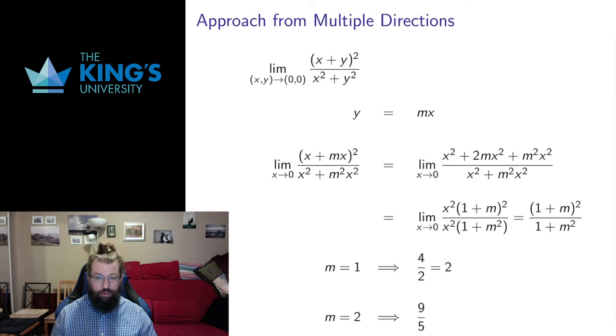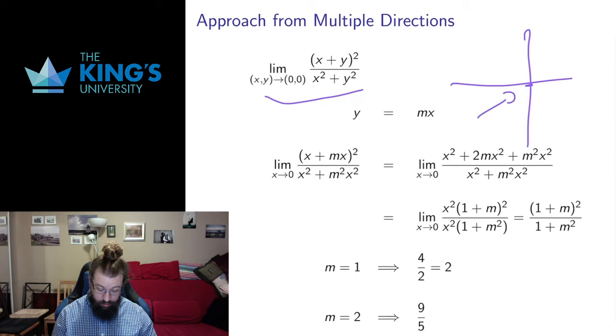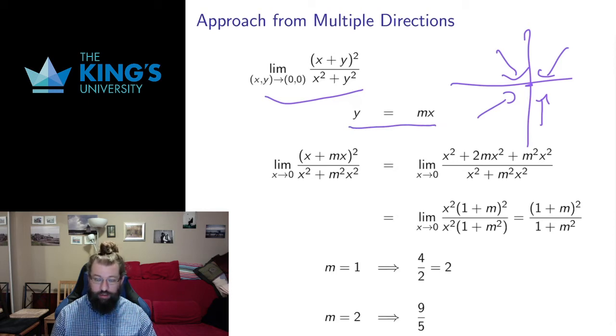However, I want to show you some examples where things don't work as nice. Here we have a limit of type 0 over 0, and there's not obviously any algebra for me to do here that's going to simplify this. In fact, I'm going to prove that this limit doesn't exist by dealing with the issue of approach from multiple directions. Here again we're approaching the origin in R^2, so I can approach from multiple directions. One way I can think about that is I can approach from lines. Let me look at the equation of a line, y equals mx, a line with slope m.